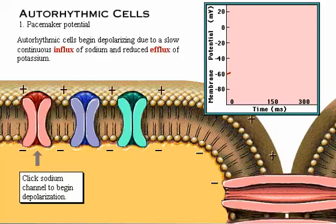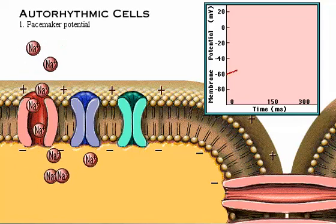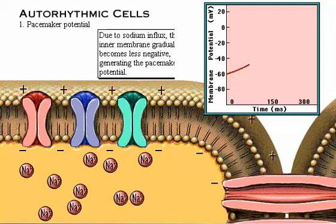Autorhythmic cells begin depolarizing due to a slow, continuous influx of sodium and reduced efflux of potassium. As sodium ions enter the cell, the inner surface of the plasma membrane gradually becomes less negative, generating the pacemaker potential.